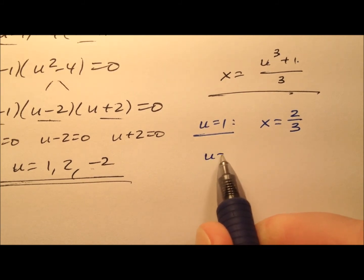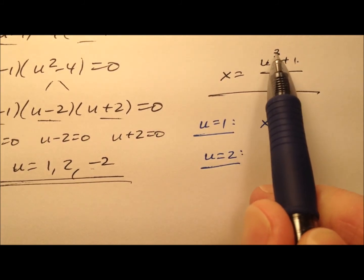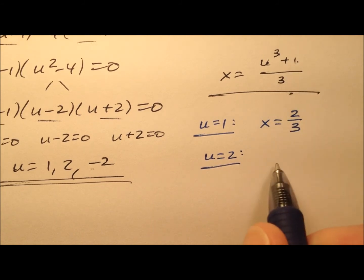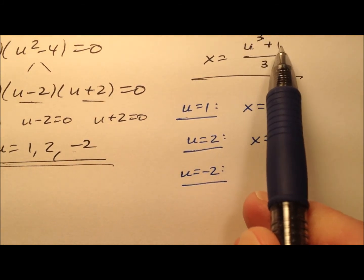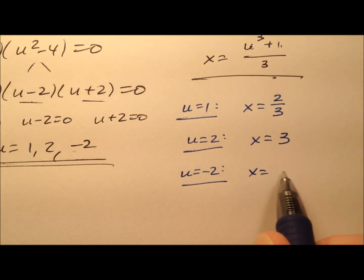All right, how about when u equals positive 2? Well, 2 cubed is 8 plus 1 is 9 divided by 3. So x equals 3, and that's nice. And finally, u equals negative 2. Negative 2 cubed is negative 8 plus 1 is negative 7. So x will be negative 7 thirds.